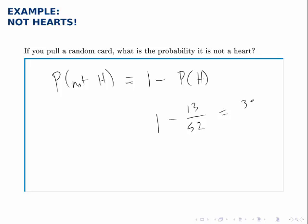Which ends up being 39 out of 52, which is exactly what we would find if we added up all the cards that aren't hearts. There are 13 spades, 13 clubs, and 13 diamonds, adding those up we get 39 total cards that are not hearts.